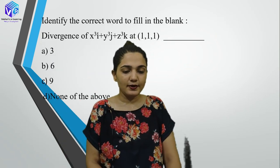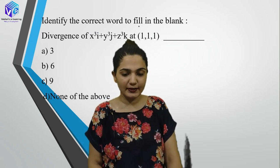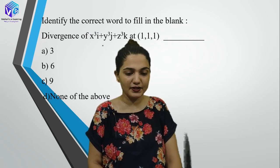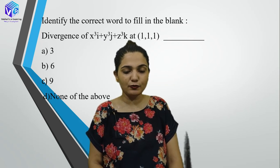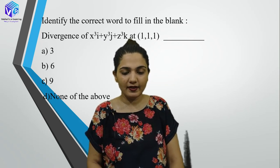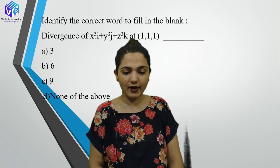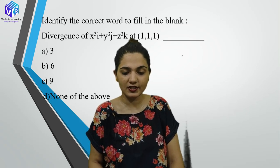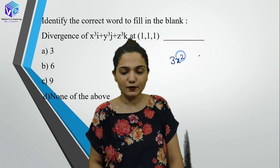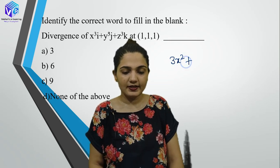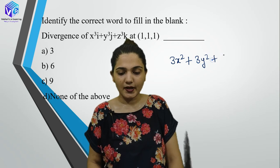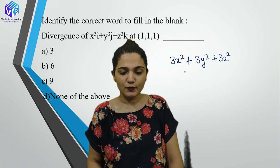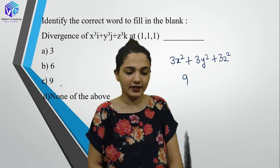Identify the divergence of x³i + y³j + z³k at point (1,1,1). Partial differentiation: del(x³)/del(x) + del(y³)/del(y) + del(z³)/del(z) = 3x² + 3y² + 3z². Putting (1,1,1): 3+3+3 = 9.